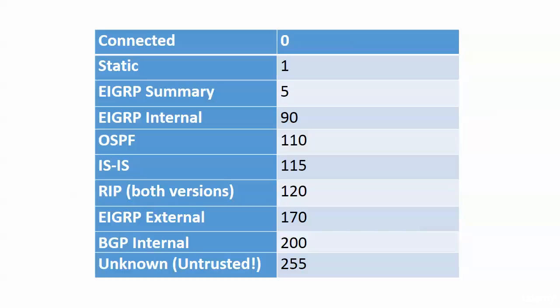That's really it for administrative distance. Again, it's strictly a tiebreaker in route choice — it looks at the longest match first, but when it comes down to the AD, it compares the administrative distance of the sources, and it could be more than two. This is a good start for memorizing the ADs you'll bump into in your CCNA studies and your NP should you go there as well. Coming up next, we're going to see equal-cost load sharing in action with RIP and also introduce you to the traceroute command.